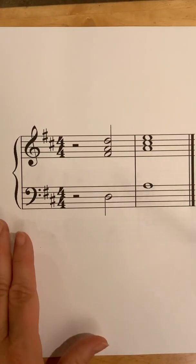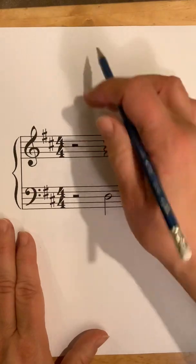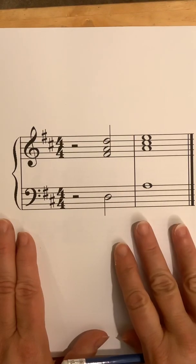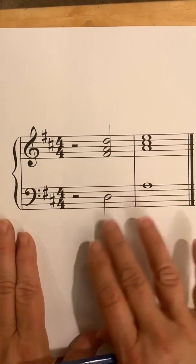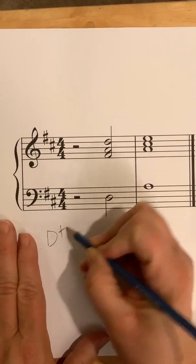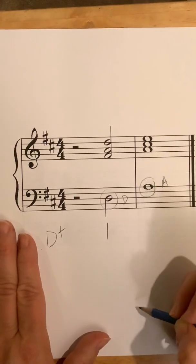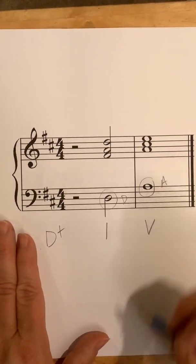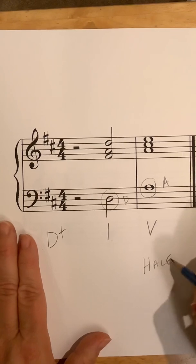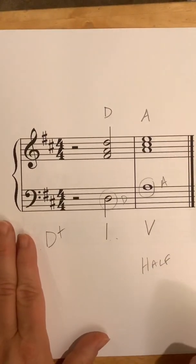Let's do a couple more together. I see two sharps, so D major or B minor — but I look and see no accidentals, so I know it's a major key. I'm going with D major. This is a D and that's an A. In D major, D is one; A is five. One to five — that's a half cadence. For the root quality chords: capital D, major triad; capital A, major triad. Done.